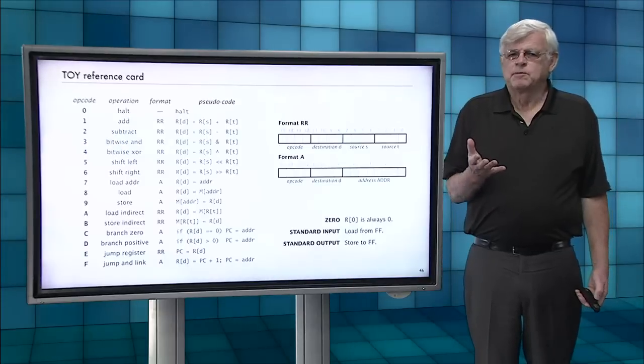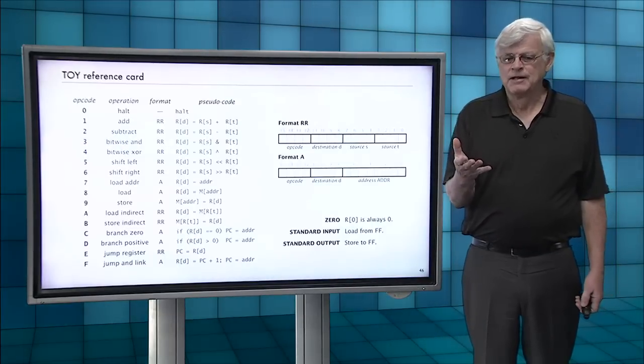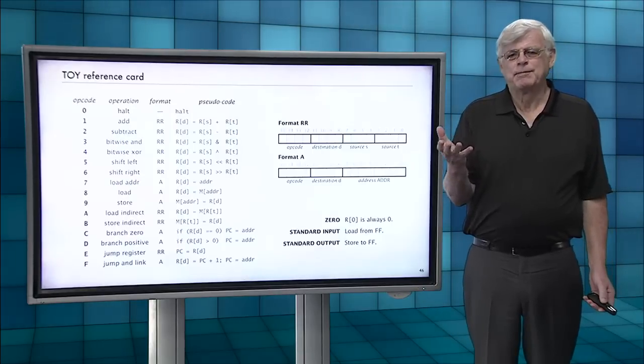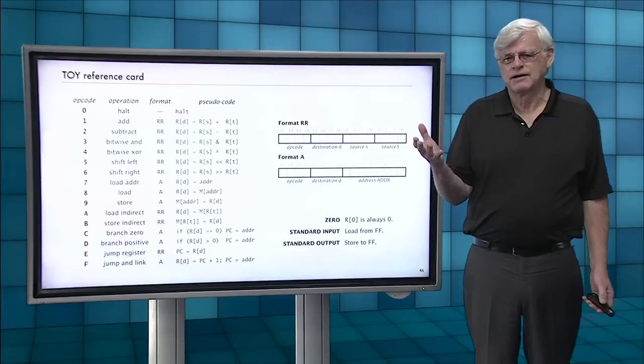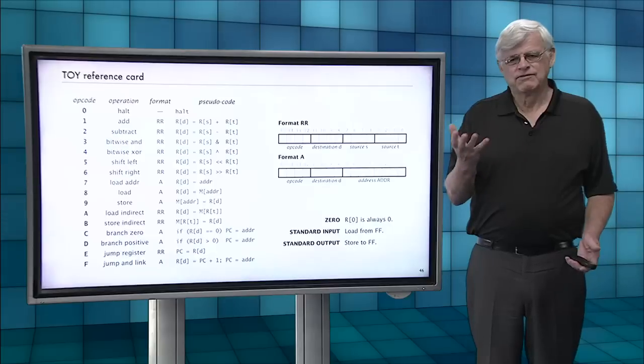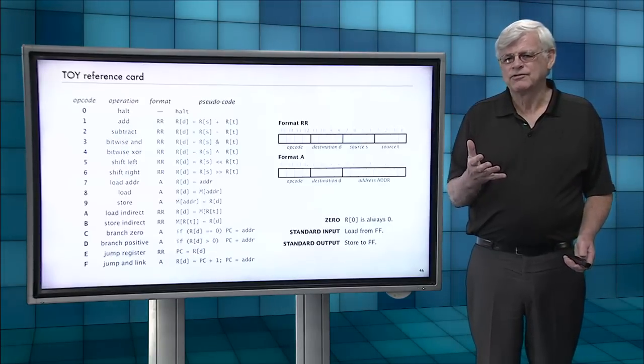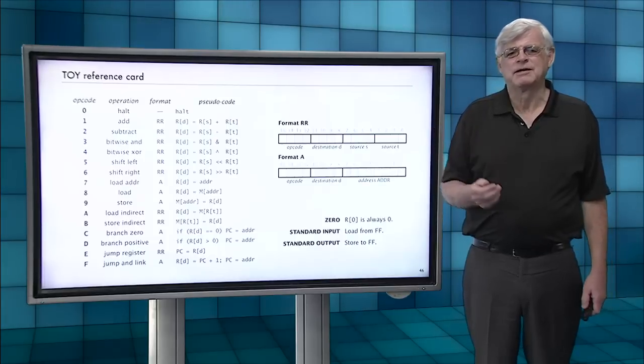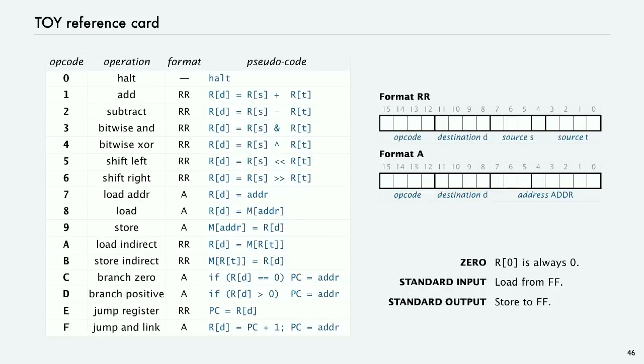So with that sample program and this slide, which is called the TOY reference card, you can already, I'm sure, imagine writing code to solve many, many of the computational problems that we addressed early on in Java. If it involves flow of control and it follows an integer bitwise operations, there's really a lot you can do. You'll find plenty of examples in the book.